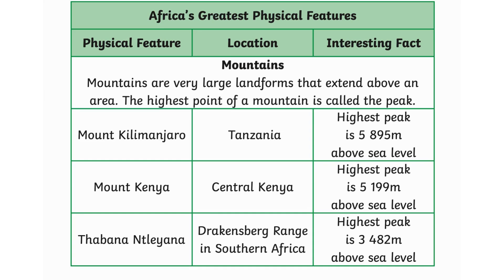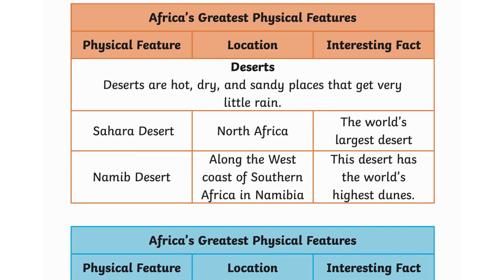Mount Kilimanjaro in Tanzania has the highest peak at 5,895 meters above sea level. Mount Kenya in central Kenya has a highest peak of 5,199 meters above sea level. Thabana Ntlenyana in the Drakensberg range in southern Africa has a highest peak of 3,482 meters above sea level.